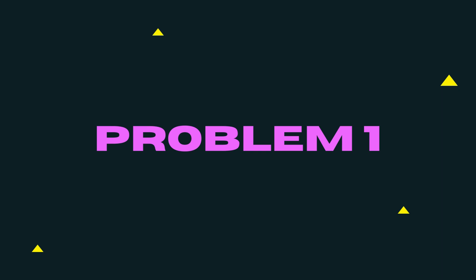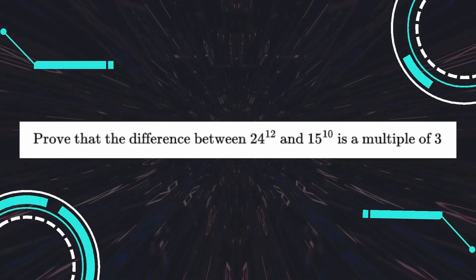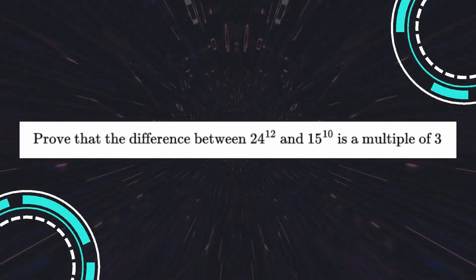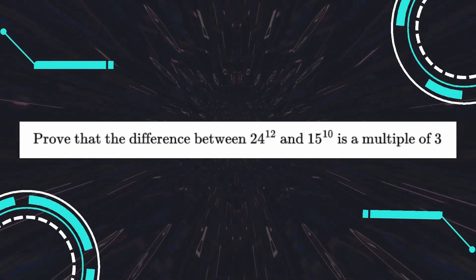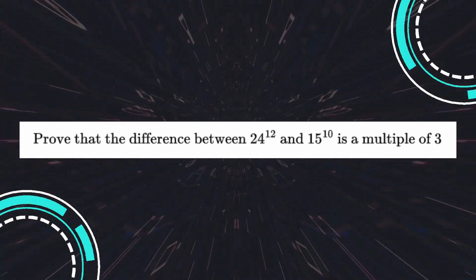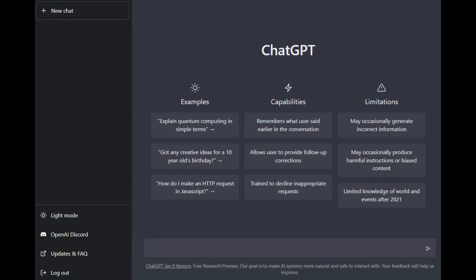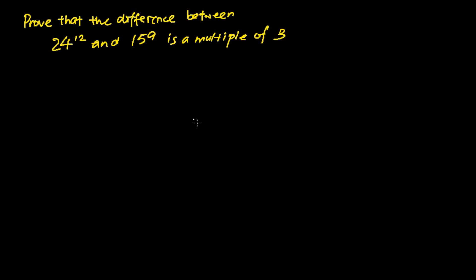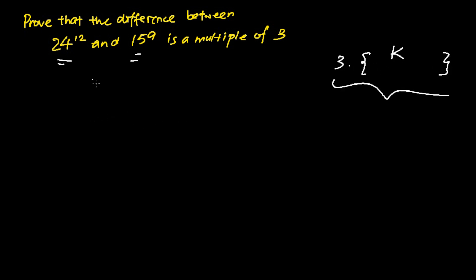The first proof we are going to ask ChatGPT is to prove that the difference between 24 to the power of 12 and 15 to the power of 9 is a multiple of three. So how do we usually go about proving this kind of question? For this particular problem we need to show that the answer is in the form three times whatever the equation will be. We will write it as 24 to the power of 12 subtracting 15 to the power of 9.